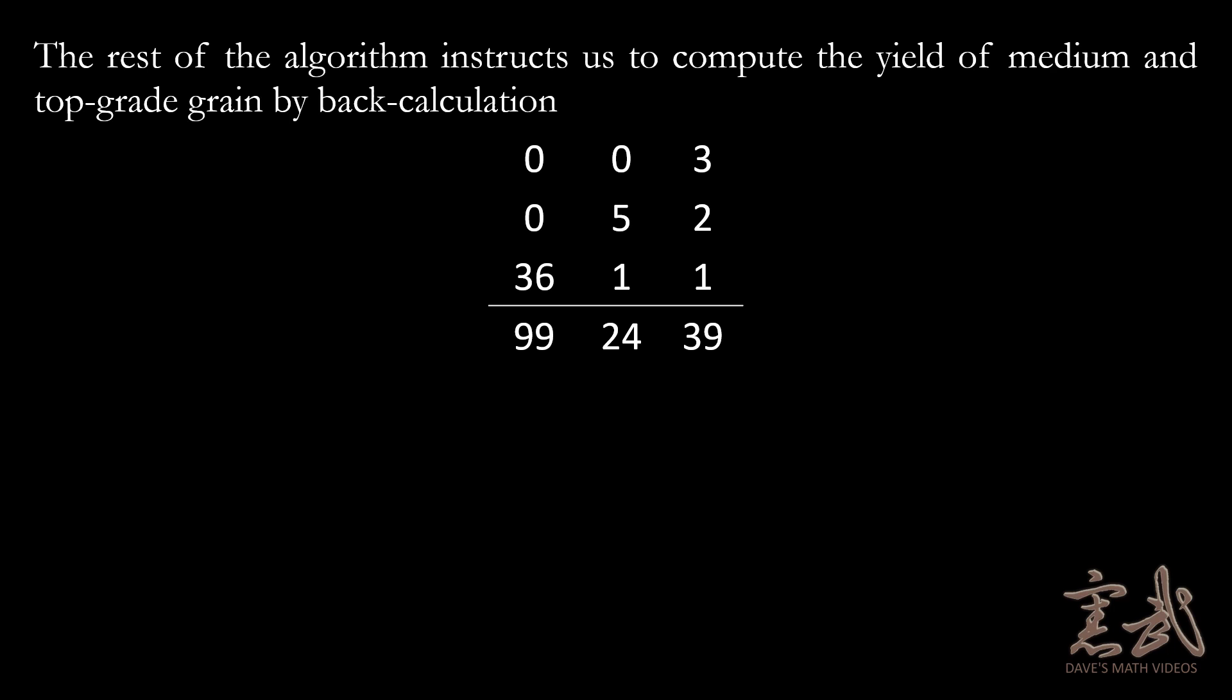So here is the matrix that we had. And we can simply go back and recalculate the yield of the middle grade grain by doing twenty-four minus one times two and three-quarters divided by five, which would give us four and a quarter for the yield of the middle grade grain.